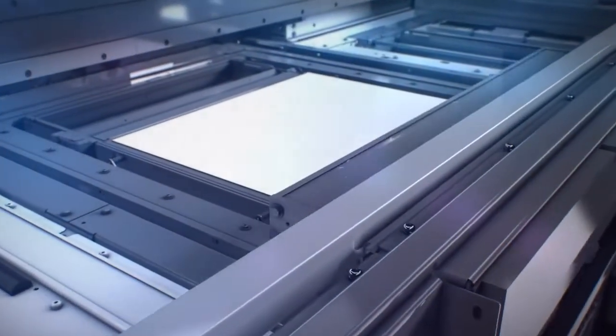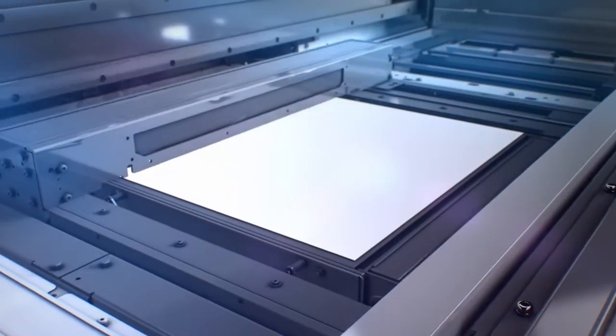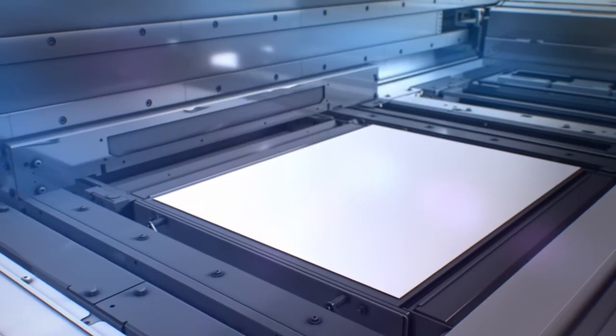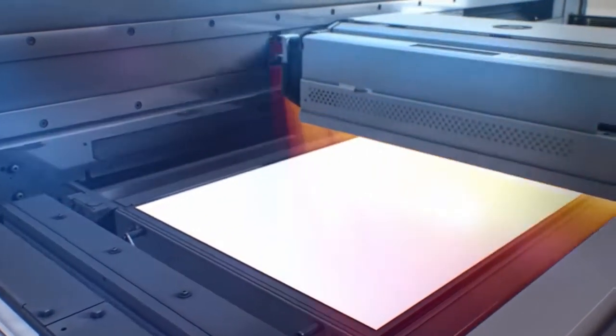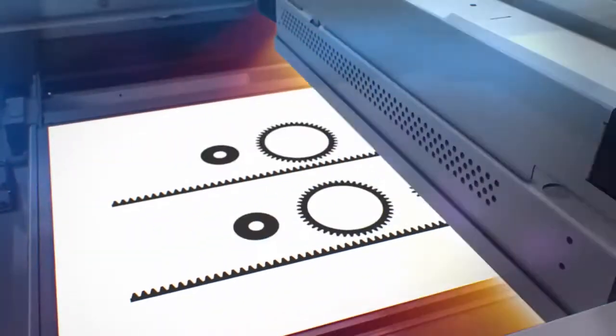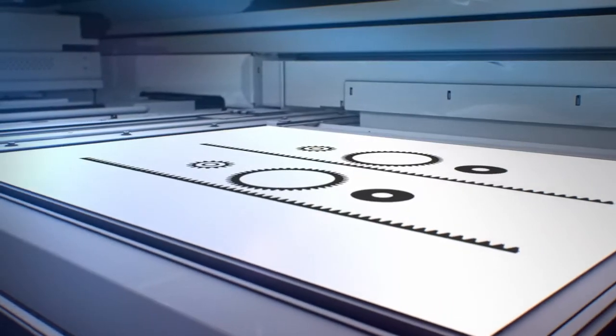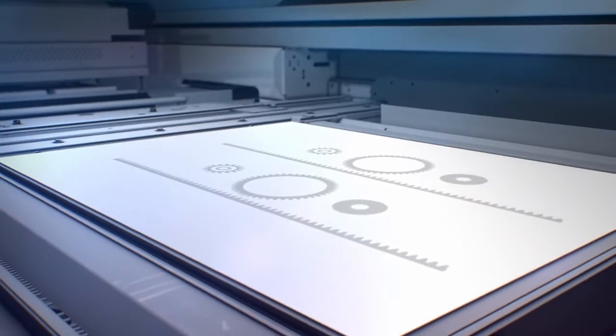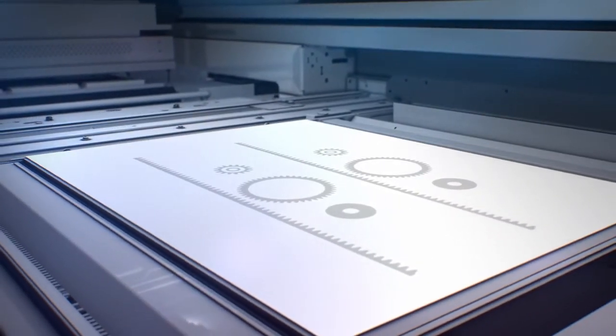The process begins by applying a layer of material in a work area. In the opposite direction, in one continuous pass, we print fusing and detailing agents across the full working area. This pass combines the printing with the fusing energy and the process is then completed.